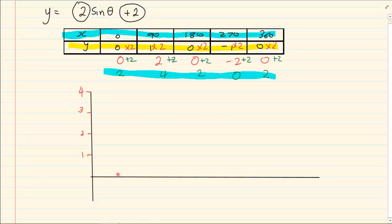Our coordinates for x are going to be 90, 180, 270, 360. This is our 0 point. So we are going to first plot 0 and 2. So x is 0, y is 2. Then we are plotting 90 and 4.